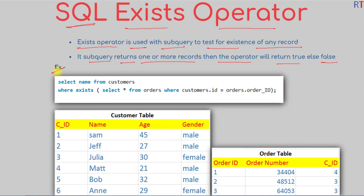For example, we have the customers table and the orders table. We can write a query using the EXISTS operator with a sub-query. We write SELECT with the column name FROM the customers table, then a WHERE clause along with the EXISTS operator. After the EXISTS operator we have the sub-query inside parentheses — we are selecting one row from the orders table.